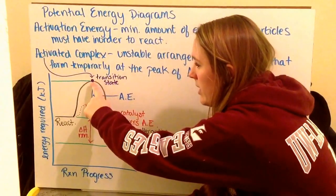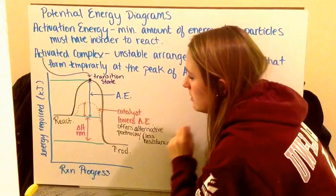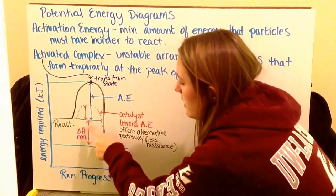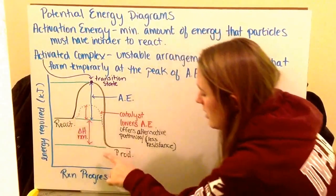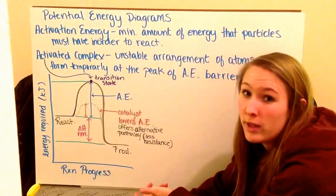At the top of the peak here is where your activated complex is, your transition state. You can have your reactants and then your products. Now the difference between where your reactants are and your products are, this is your delta H, or the change in energy for the actual reaction.